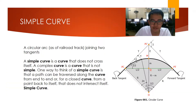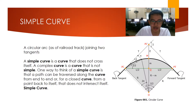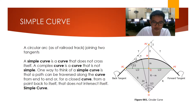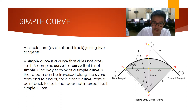Let us define what is a simple curve. A simple curve is a circular arc joining two tangents. A simple curve is a curve that does not cross itself. One way to think of a simple curve is that a path can be traversed along the curve from end to end, or for a closed curve, from a point back to itself, without intersecting itself.